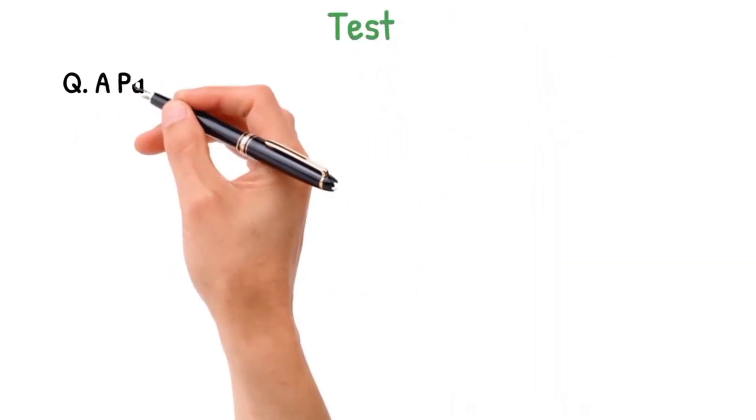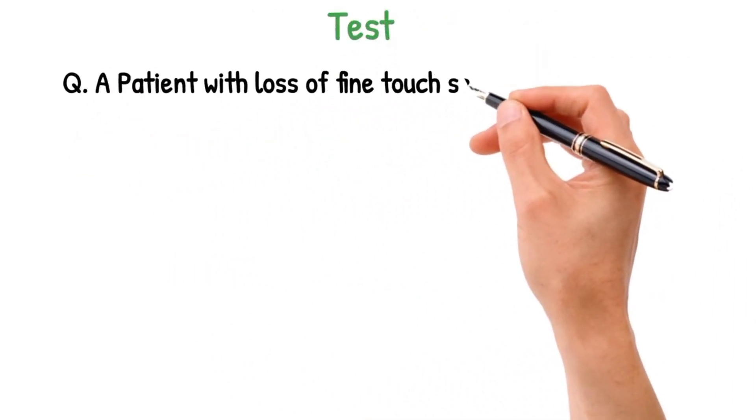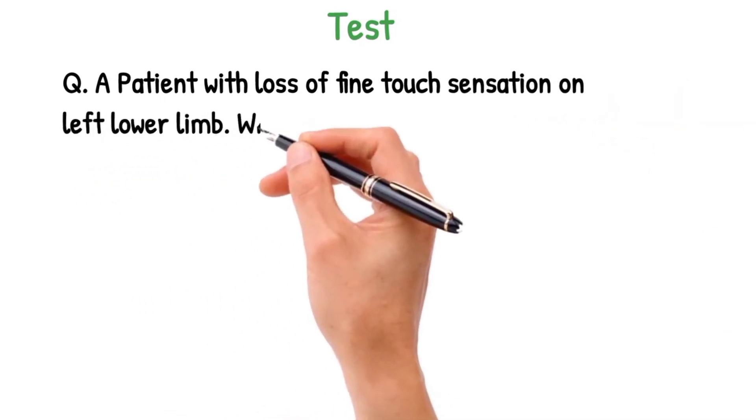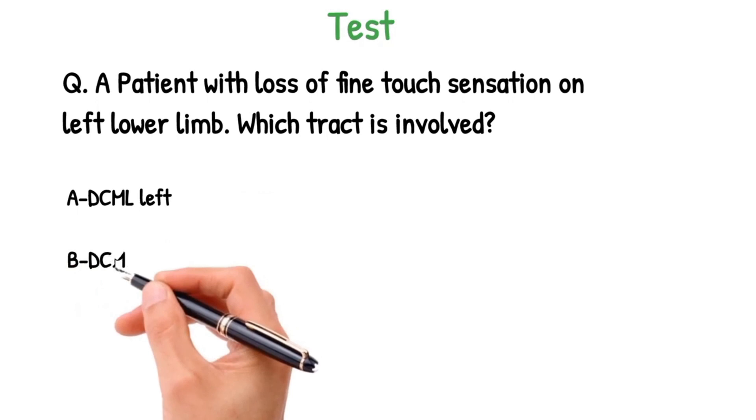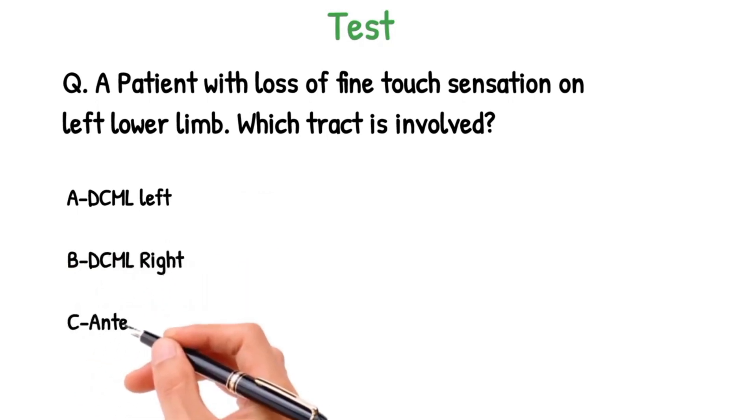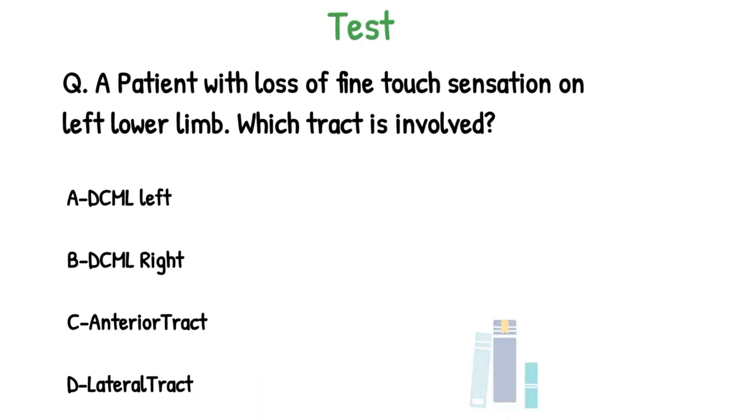Now it's time to test your knowledge. A patient presented with loss of fine touch sensation on left lower limb, which tract is involved? A dorsal column left side, B dorsal column right side, C anterior tract or D lateral tract. Have a good brainstorming you have got it. I will give you some seconds. Just remember the concepts. The correct answer is A that is dorsal column left side.